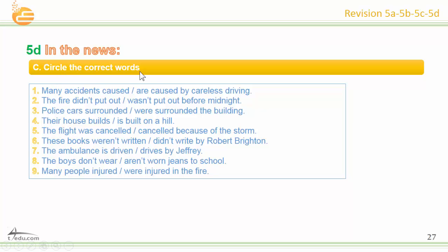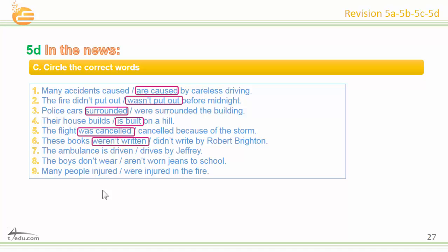Circle the correct words. Number one: are caused. Number two: wasn't put out. Number three: surrounded. Number four: is built. Number five: was cancelled. Number six: were written. Number seven: is driven. Number eight: don't wear. Number nine: were injured.